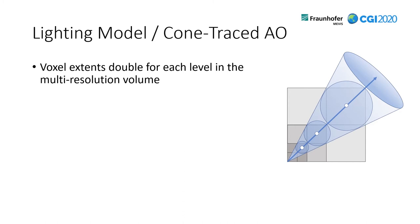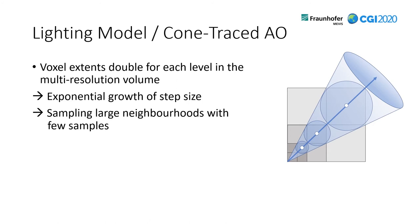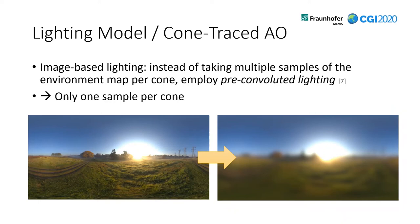The advantage is that there is only minimal pre-computation required, because creating the multi-resolution volume comes down to just a downsampling that can be implemented very efficiently and is real-time capable. The voxel extent doubles for each level in the multi-resolution volume, leading to an exponential growth of the step size, so sampling large neighborhoods with a few samples is possible. The approach is also fully noise-free. Regarding image-based lighting, when computing radiance per cone we have to sample the environment map. We employ pre-convoluted lighting, meaning we just take one sample per cone, which makes the approach more efficient.